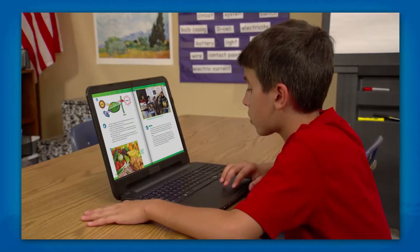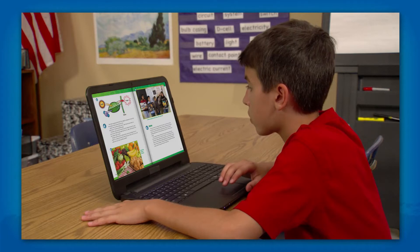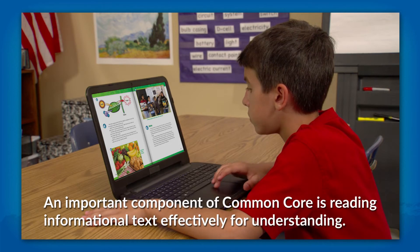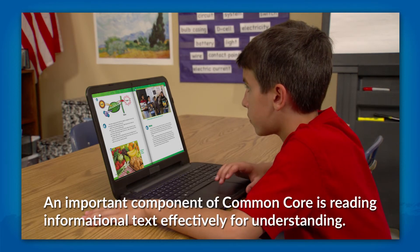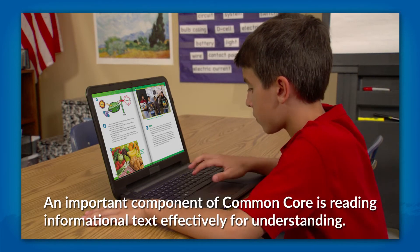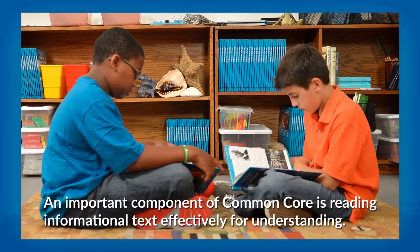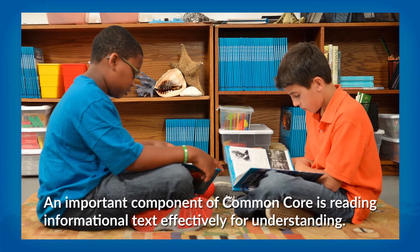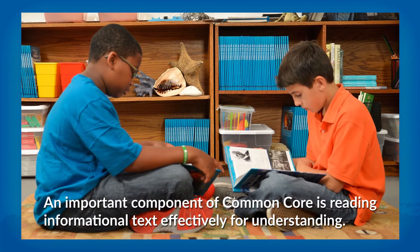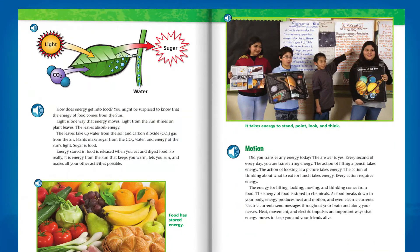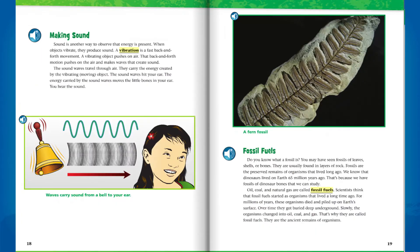FOSS builds common core literacy skills through science investigations. One important common core skill is reading informational text effectively for understanding. FOSS Science Resources books provide students with informational text to help them make connections to the science concepts introduced and explored during the investigations.